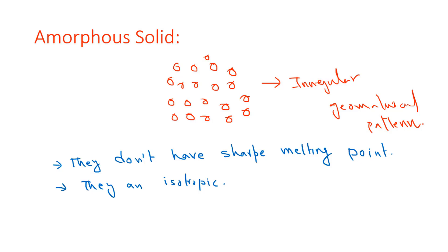What are the properties of amorphous? The property is that they don't have a sharp melting point. Why don't they have a sharp melting point? Because the bonding of the molecules — different molecules have different bond strengths. Maybe some molecules have more strength, maybe the bonding of some molecules is weaker, and maybe the bonding of other molecules is different. That's why they don't have a sharp melting point. And they have isotropic nature, which means the physical property of that material is the same in every direction.